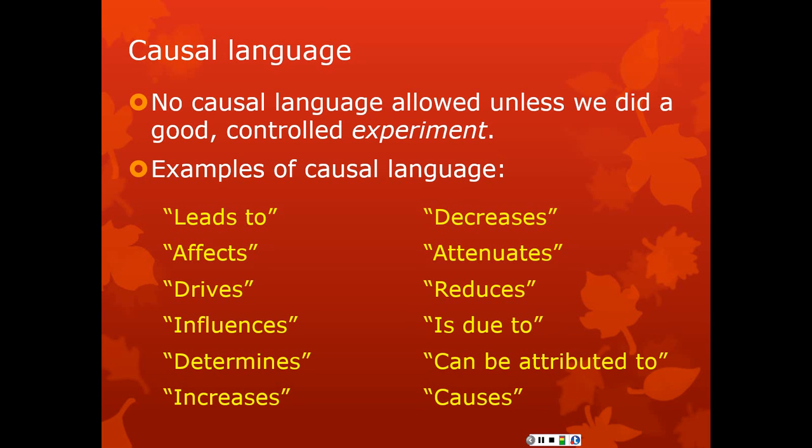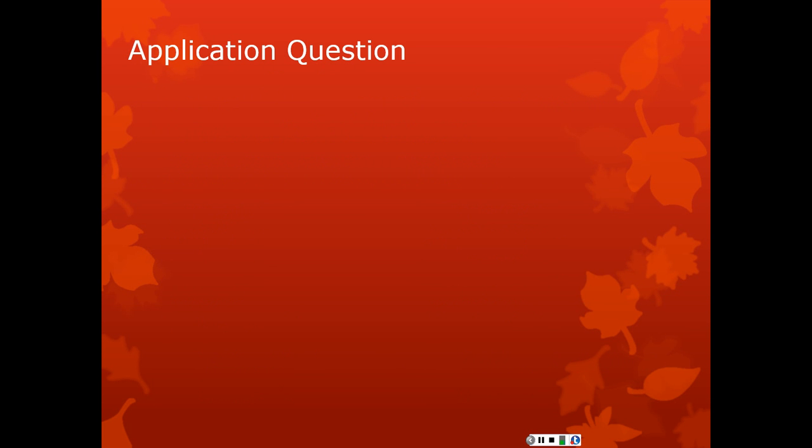You have to be very careful not to use this kind of language. This is far from an exhaustive list. But you have to be very careful not to use this language unless it's warranted, unless you did the right kind of research study. And when you read other people's research and they start using this kind of language, you need to say, wait a minute, did they do the right kind of research design to determine that there was some causality happening there? Are they appropriately respecting the kind of research experiment that they did? Or are they trying to stretch what they did into something it really isn't?